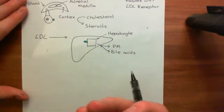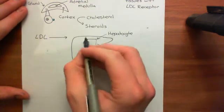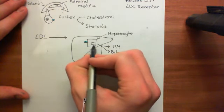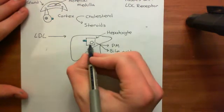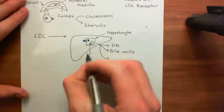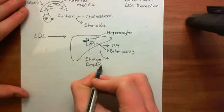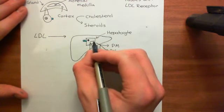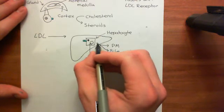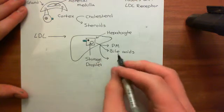Where did the cholesterol of the LDL molecules originally come from? It came from the liver, so it's just being recycled — the liver put it into the VLDL and is just getting it back in the form of LDL. You can also store cholesterol within hepatocytes, forming little storage droplets. It's actually cholesterol esters which are stored within these storage droplets, so you de-esterify the cholesterol esters back to cholesterol and long-chain carboxylic acids, and then re-esterify the cholesterol to put it back into the form of cholesterol esters for storage.